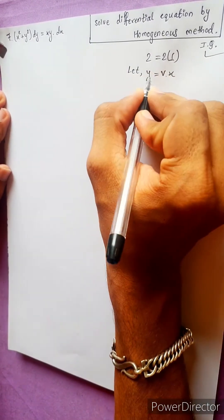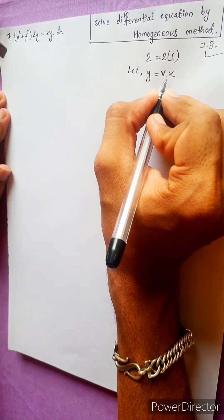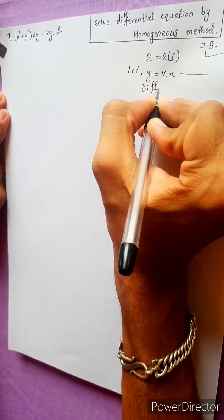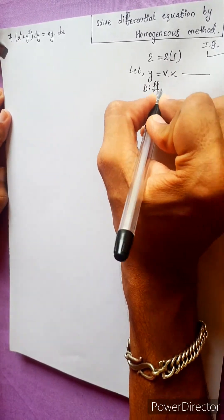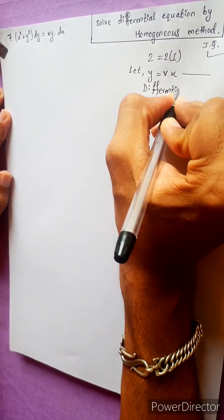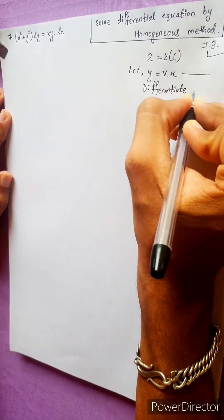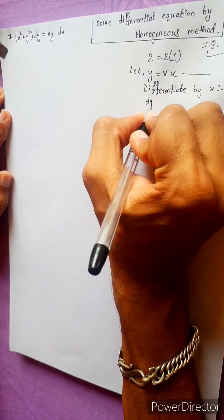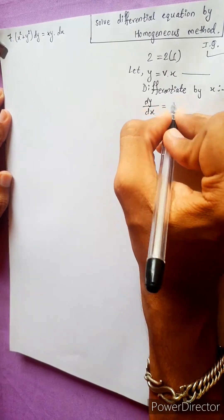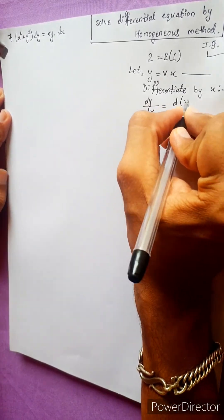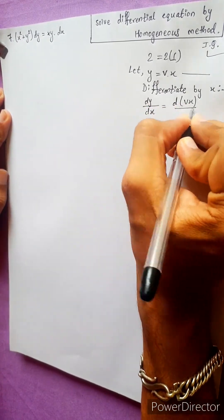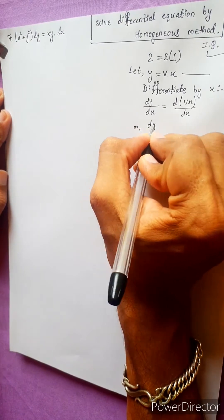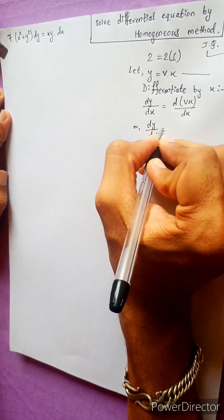Let y equals to vx. This means differentiate. Differentiate by x, both sides. dy/dx equals to d of vx by dx, and dy/dx equals to...